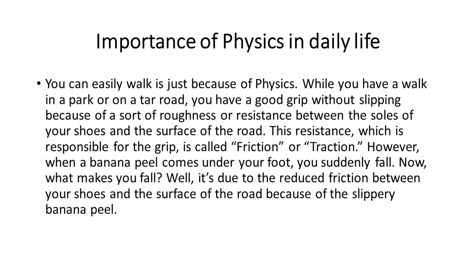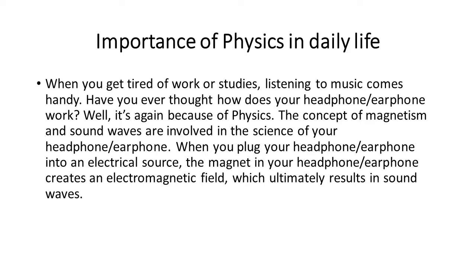Because of physics, you can easily walk. While you walk on a park path or a tar road, you have a good grip without slipping because of roughness or resistance between the soles of your shoes and the surface of the road. This resistance responsible for the grip is called friction. When you step on a banana peel, you slip and fall — this is also due to friction, because the banana peel reduces friction between your shoes and the road surface.